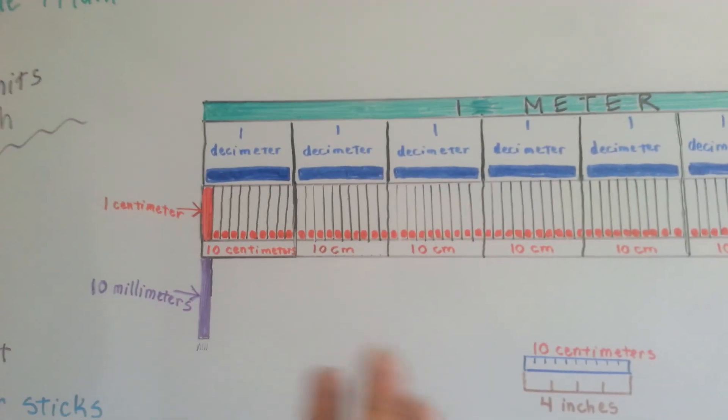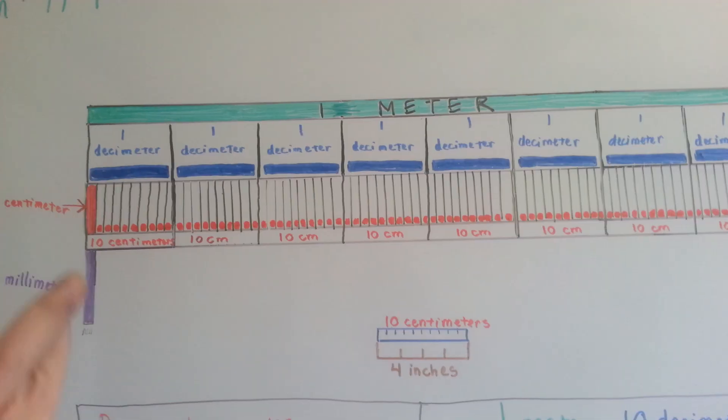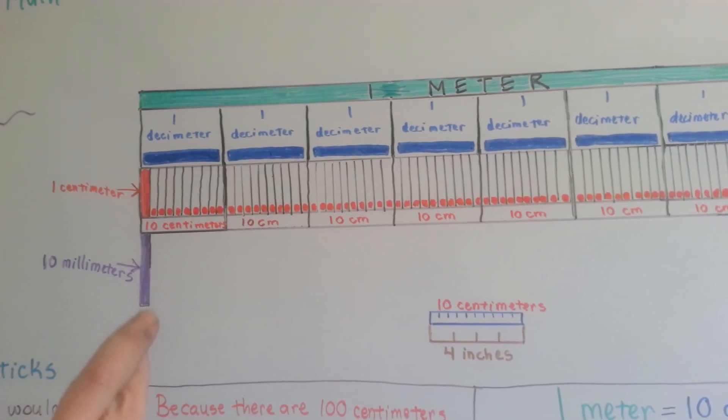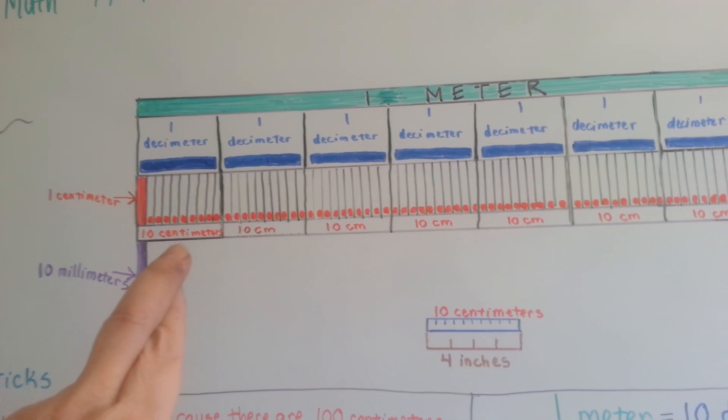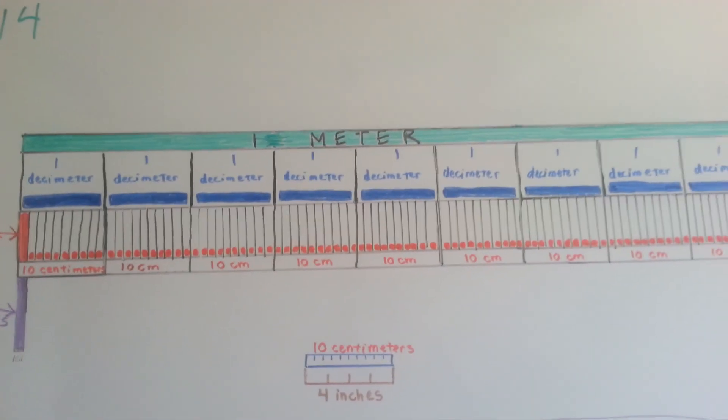So, they're all based off of tens. Ten millimeters make a centimeter. Ten centimeters make a decimeter. Ten decimeters make a meter. Isn't that easy to remember?